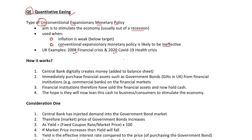So how does QE work? Step one: the central bank will electronically or digitally create money, and that is added to the central bank's balance sheet — the Bank of England in the case of the UK. Step two: they will immediately purchase financial assets such as government bonds, which in the UK are referred to as gilts, buying them from financial institutions such as commercial banks found on the financial markets.